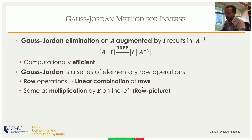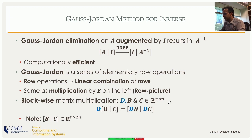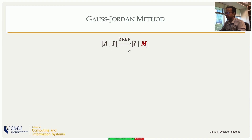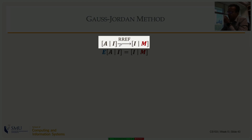Gauss-Jordan is a series of elementary row operations, and row operations are linear combinations of rows. Applying Gauss-Jordan to a matrix is equivalent to multiplying on the left by an elementary operator E, or a series of elementary operators. Using blockwise multiplication: if you have D times the augmented matrix [B | C], that equals [DB | DC], distributing D inside. Applying Gauss-Jordan to [A | I] will produce I on the left and some unknown matrix M on the right.